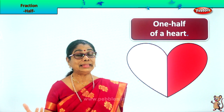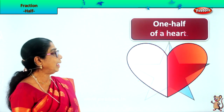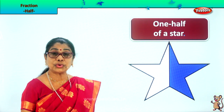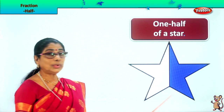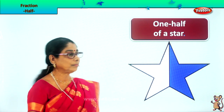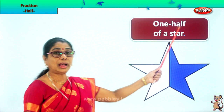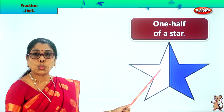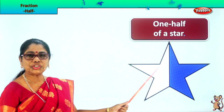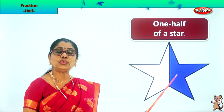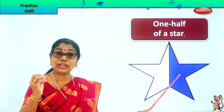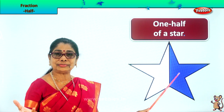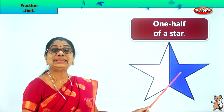Let's take another shape. Here we have a star. A star can also be divided into two equal halves. This is one half of a star, and this is also one half of a star. Any shape you can divide into two equal halves. So today we learnt what is in fraction, half. This is one half of a star.